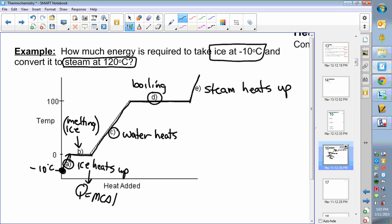Melting of ice is a formula where we use delta h equals n h, an enthalpy question. Water heating up, you're back to q equals mc delta t.